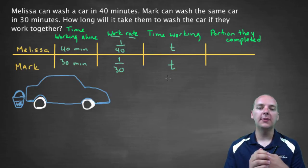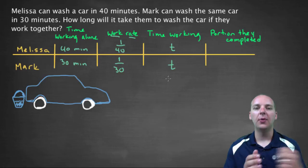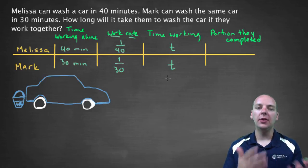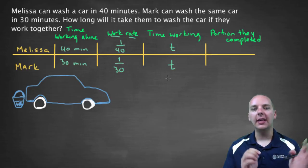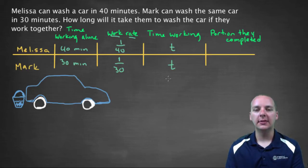Even though Mark works faster, there's not going to be a scenario where, because Mark works faster, he does his half and then goes and gets a beverage to drink and watch Melissa finish up her half. It doesn't work like that. Even though he's working faster, he's still going to keep washing with Melissa until the car is completely washed, alright?